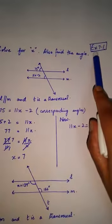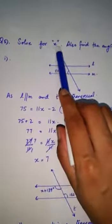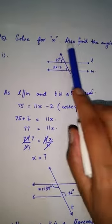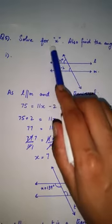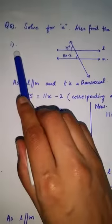In this video we will discuss Exercise 7.1 Question Number 5: solve for x and also find the angles. We have to find the value of variable x, and the first part they have given